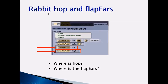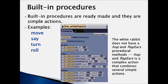When we take a look at our code: White Rabbit Turn Left, White Rabbit Delay, White Rabbit Hop, White Rabbit Flap Ears. Now where is hop? Where is flap ears? These are built-in procedures. Built-in procedures are ready-made procedures and they are very simple actions. We have used built-in procedures so far in our class.